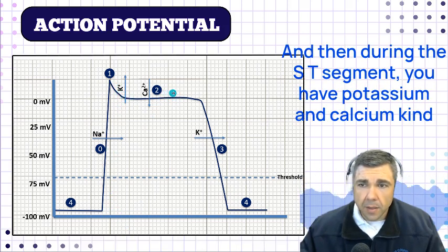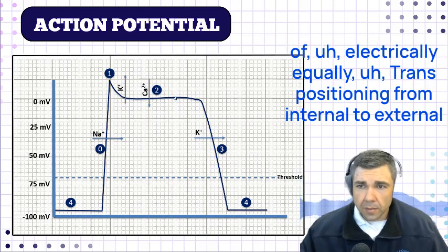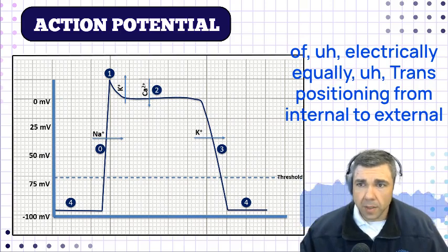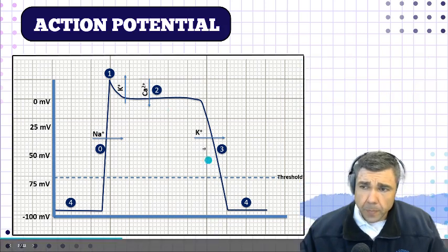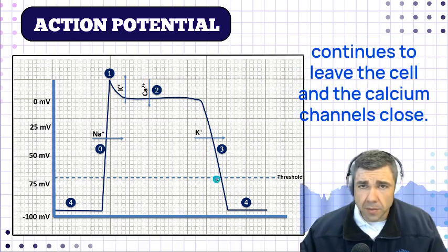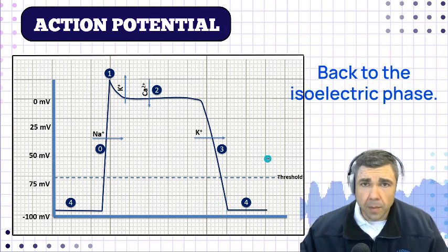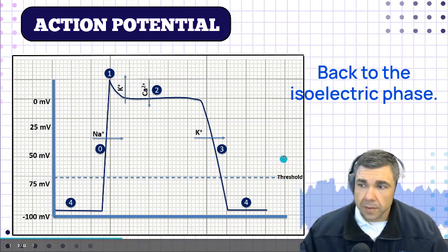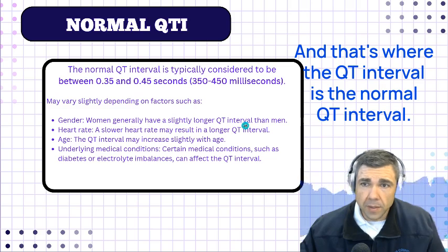Then during the ST segment, you have potassium and calcium kind of electrically equally transitioning from intracellular to extracellular. Then you get ventricular repolarization as potassium continues to leave the cell and the calcium channels close, and then you come back down to the isoelectric phase. So that's what happens during the action potential, and that's where the QT interval is.